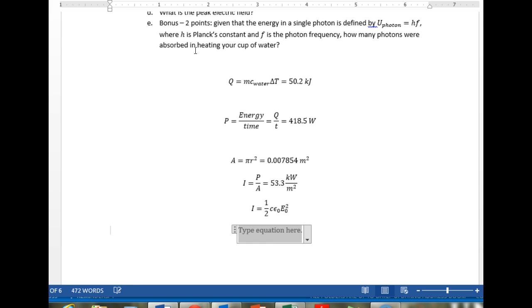First, this is 2I divided by C epsilon naught. And then taking the square root of both sides, square root of 2I divided by C epsilon naught. Let me get that naught in there. There we go.